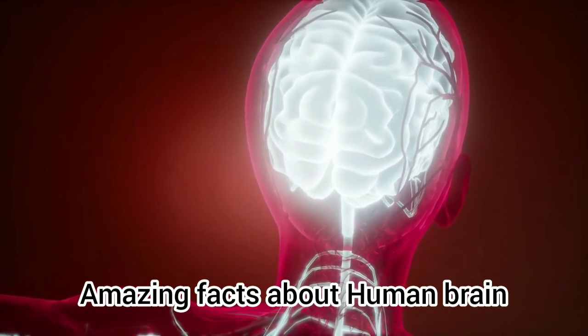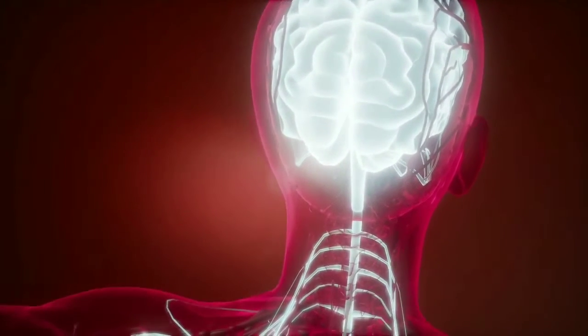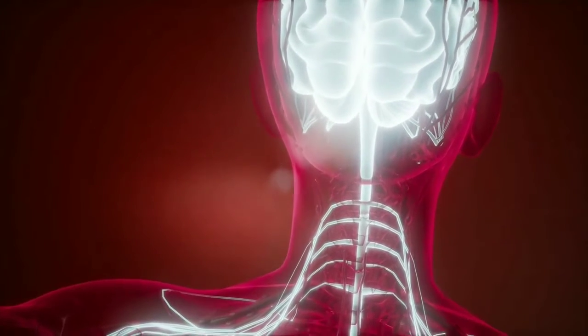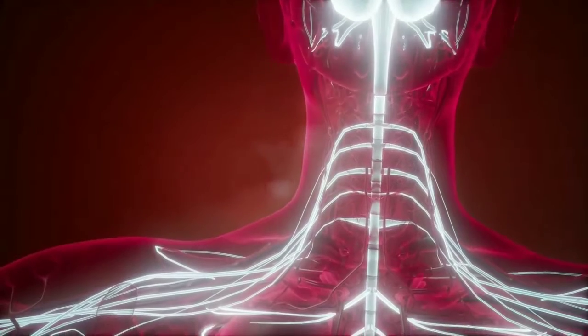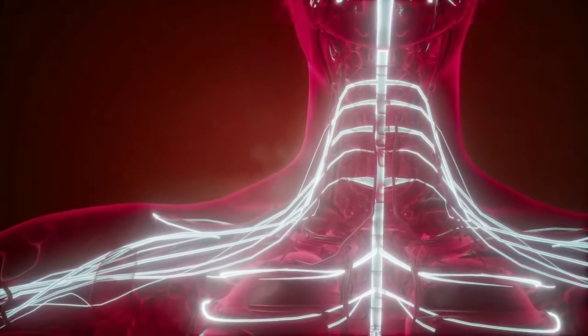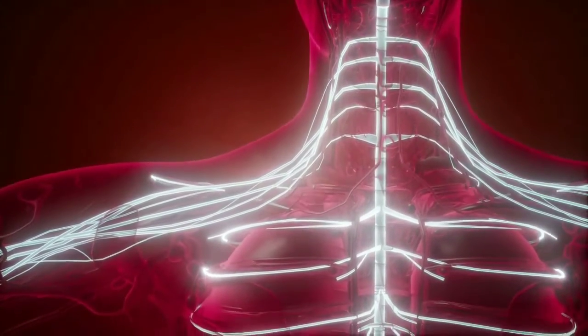Amazing facts about the human brain. The brain is part of your body's central nervous system. It's the most complicated part of your body. It has the ability to send and receive an enormous amount of information.